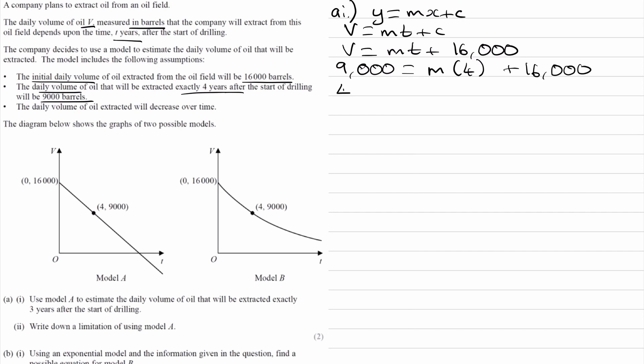We can put our coordinate of (4, 9000) in. So 9,000 equals m times 4 plus 16,000. Rearranging for m, we end up with 4m equals minus 7,000, so m will be equal to minus 1,750.